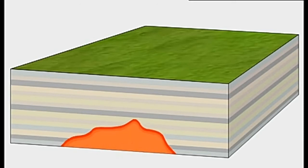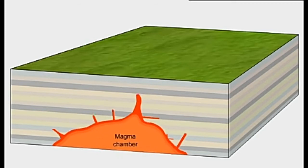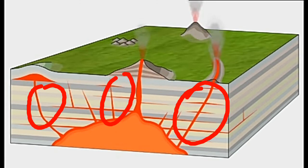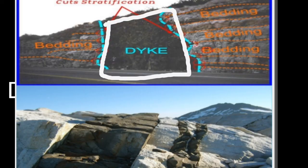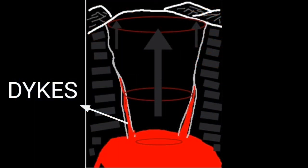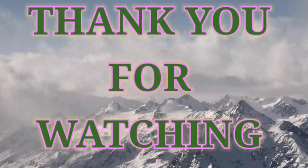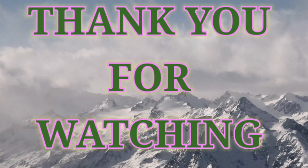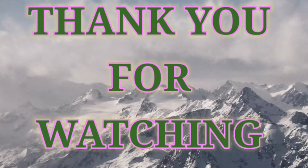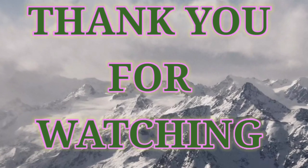The last intrusive landform is the dyke. When lava makes its way through cracks and moves perpendicular to the ground, sometimes it gets solidified in the same position and develops into a wall-like structure. Such perpendicular wall-like structures inside the earth are called dykes. And here we come to an end of this chapter. I hope this video has helped you a lot in clearing your concepts. Thank you all for watching. For the next chapter, stay tuned.